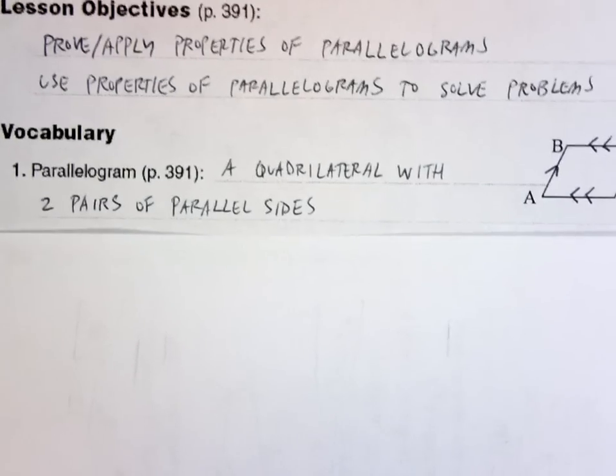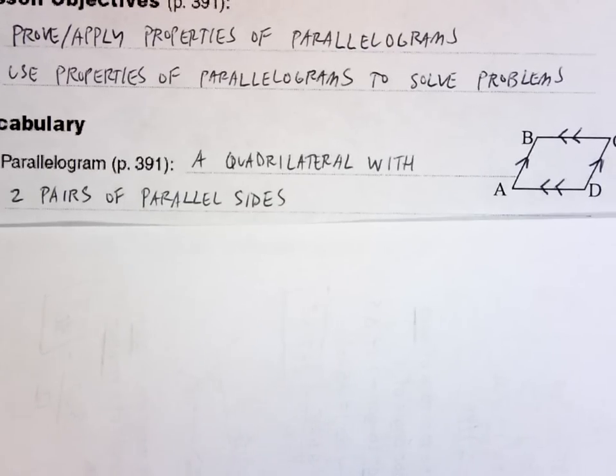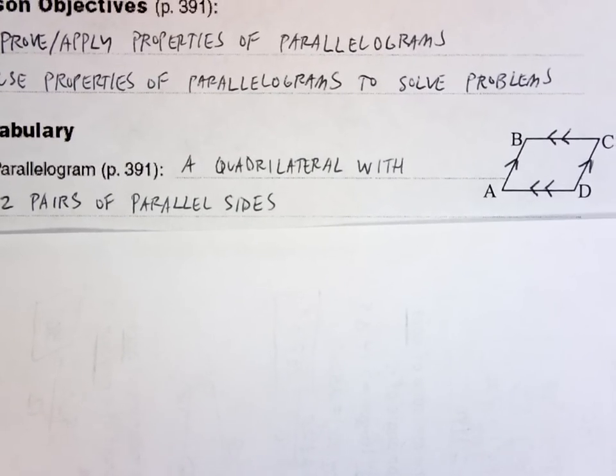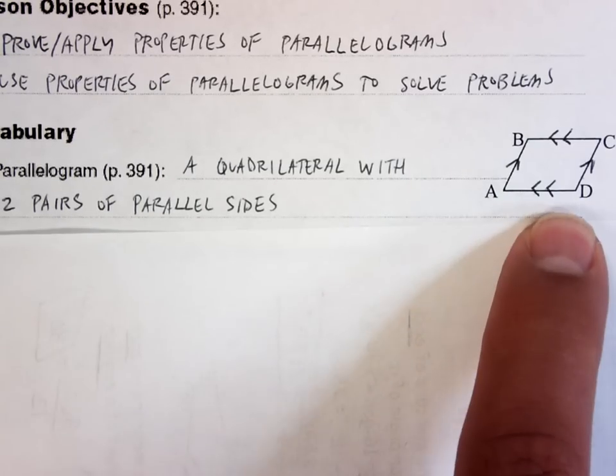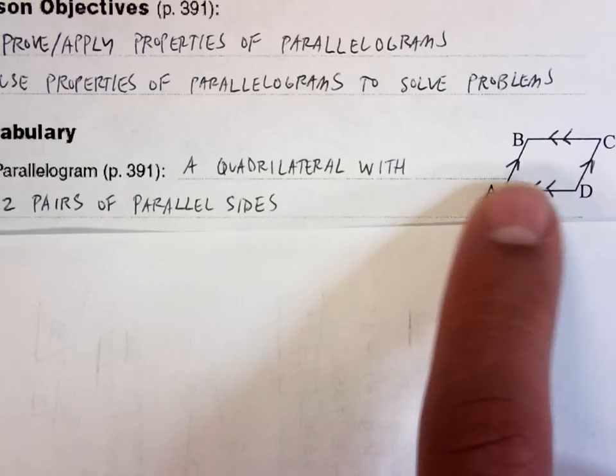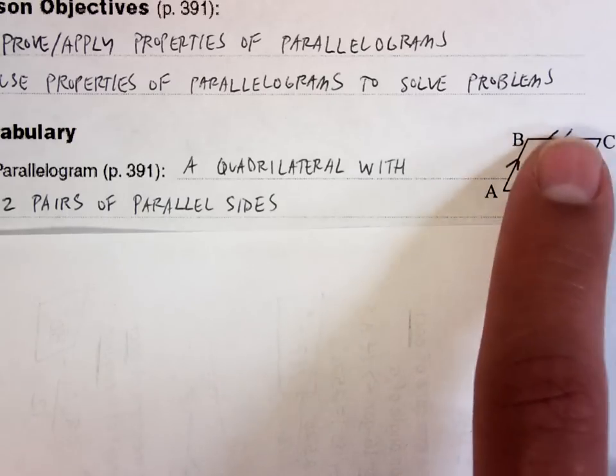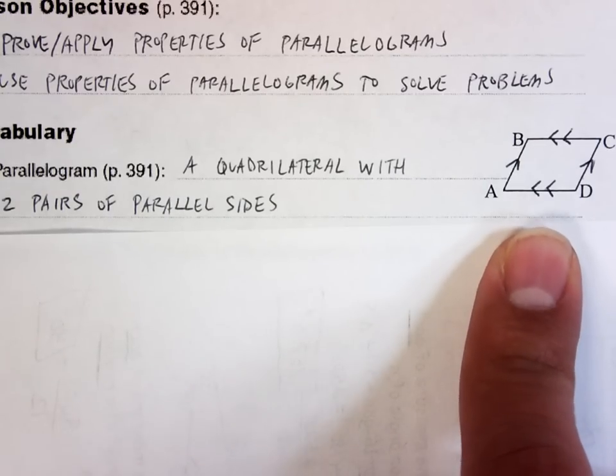Definition. What is a parallelogram? It's just a quadrilateral with two pairs of parallel sides. A quadrilateral with two pairs of parallel sides, and I marked up my picture just showing what that means. This side parallel to that side, and then BC parallel to AD. That's all a quadrilateral is.